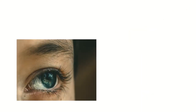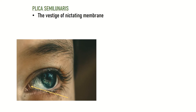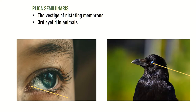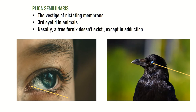The fornix is present superiorly, inferiorly, and temporally, while medially it forms the plica semilunaris. Plica semilunaris is the vestige of the nictating membrane, also known as the third eyelid, present in a few animals. Nasally, a true fornix does not exist except when the eye is in adduction.